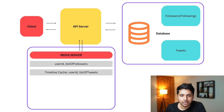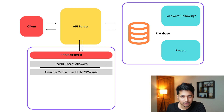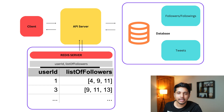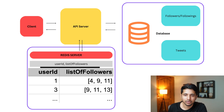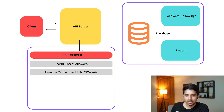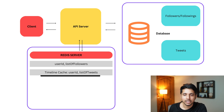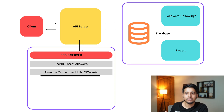For the fanout approach we are going to create two caches in Redis. The first one maps a user ID to a list of their followers — for example, user ID 1 has followers 4, 9, 11, and user ID 3 has followers 9, 11, 13. The second cache is a very important one called the timeline cache, where we store a user ID as the key and the value is the list of tweets to show to that particular user.